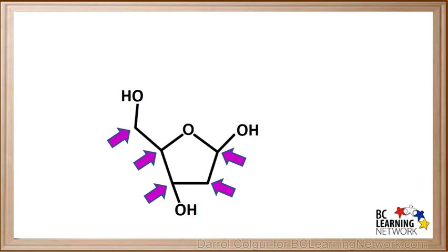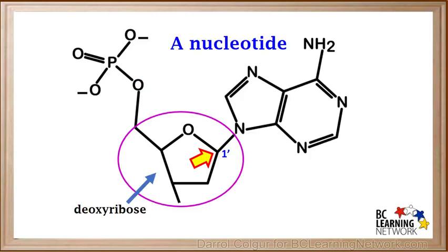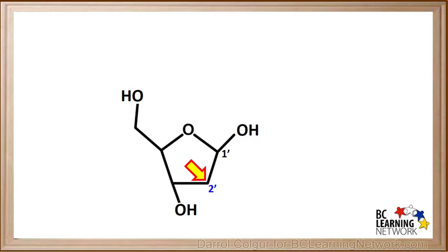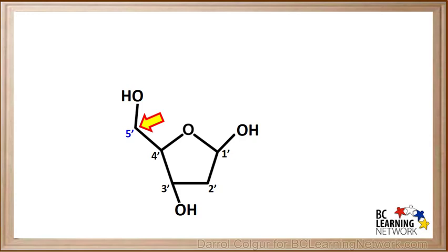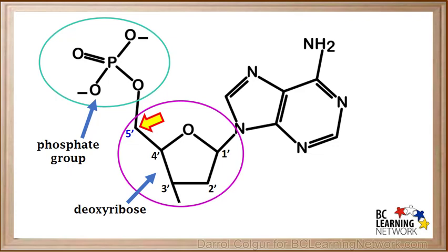The carbon atoms in deoxyribose are numbered in a very specific way. This carbon atom is designated 1 prime — it is the carbon atom on deoxyribose connected to the group on the right side of the nucleotide. Proceeding in a clockwise direction, the next carbon atom is called 2 prime. This one is called 3 prime. The 3 prime carbon is important because it's the carbon atom in a nucleotide that bonds to other nucleotides, as we'll see later. This carbon atom is called 4 prime. This is the 5th carbon on deoxyribose, called 5 prime — it is the carbon atom outside of the 5-membered ring. This 5 prime carbon is also important, as it is the carbon atom in deoxyribose that's bonded to the phosphate group in the nucleotide.